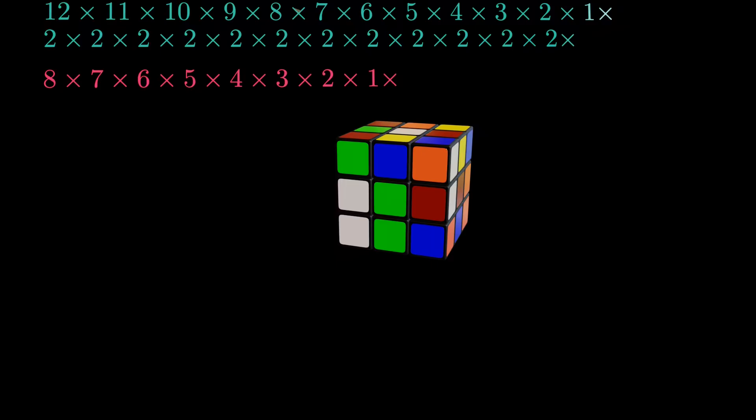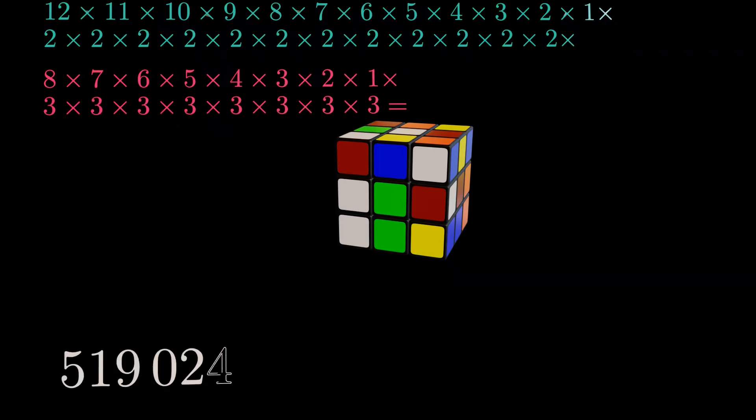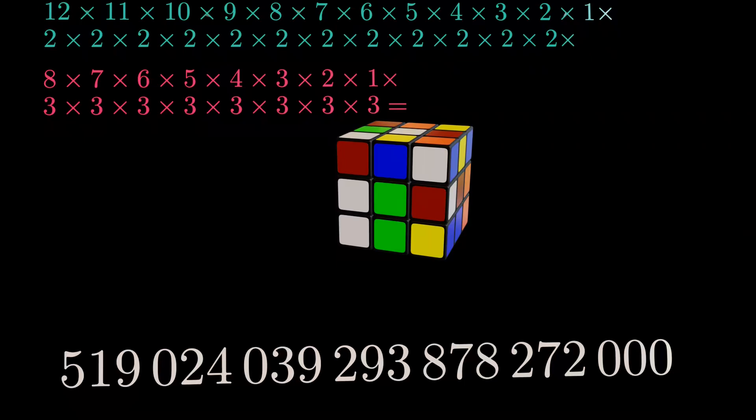Just like with the edges, placing the corners is only part of the story. Each corner piece can also be twisted in three different orientations, which adds another layer to the counting process. This means that each of the three possible rotations of the first corner piece can be combined with three possible orientations of the second corner piece and so on. When all the factors are multiplied, we end up with a ridiculously large number of more than 500 quintillion.